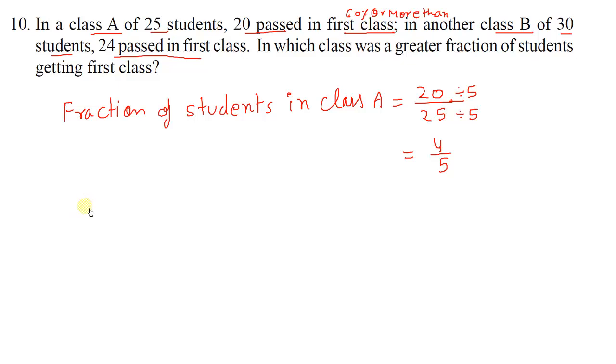Similarly, for class B, we'll find it. Fraction of students in class B equals: Here, 24 students passed in first class, and total students are 30. This is divisible by 6. We'll divide by 6 in numerator and denominator. 6 times 4 is 24, 6 times 5 is 30. 4 upon 5.